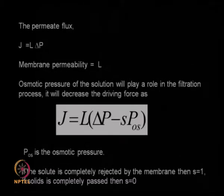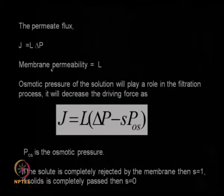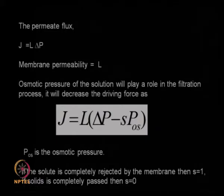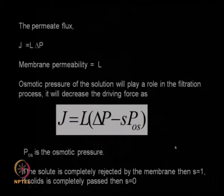The permeate flux is given by J = L·ΔP, where L is the membrane permeability and ΔP is the driving force (pressure). In the presence of osmotic pressure, J = L·(ΔP − S·P_os), where P_os is the osmotic pressure and S can be 0 or 1. If the solute is completely rejected by the membrane, S = 1 and the osmotic pressure has full effect. If the solute completely passes through, S = 0.